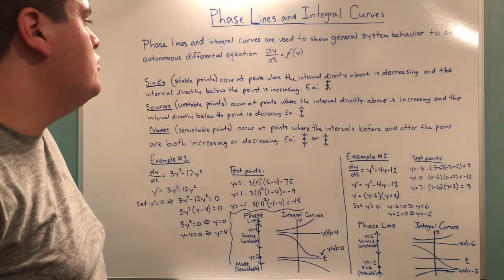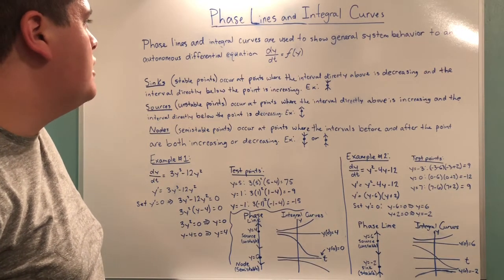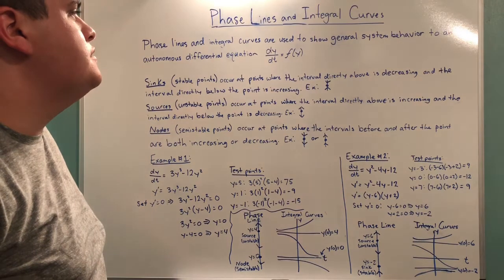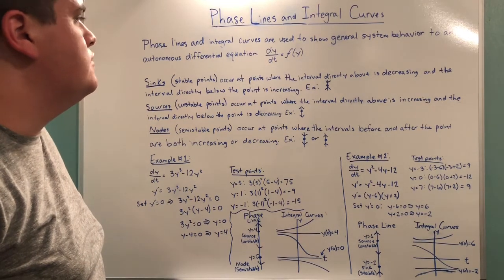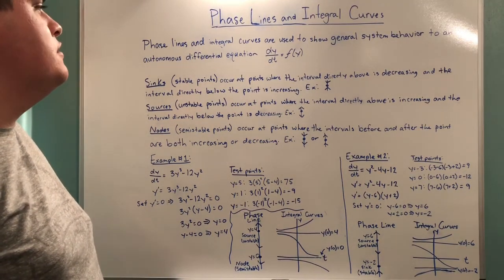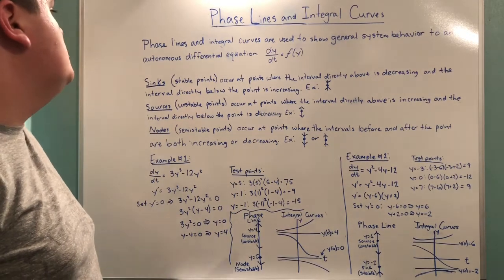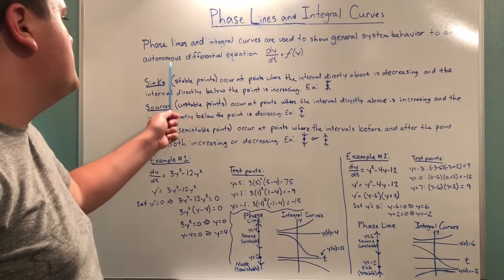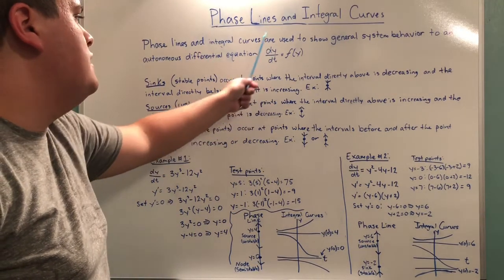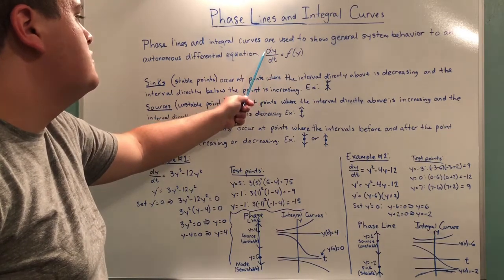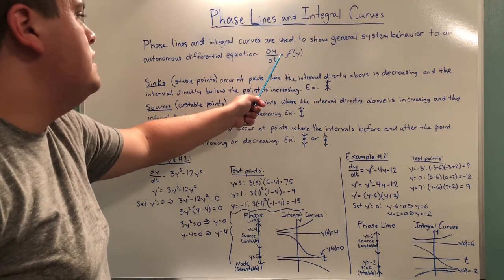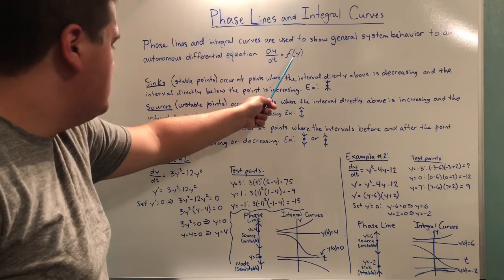For today's lesson we'll be learning about phase lines and integral curves, often used in differential equations. Phase lines and integral curves are used to show general system behavior to an autonomous differential equation. Autonomous means that our first order derivative y prime is equal to some function of y.